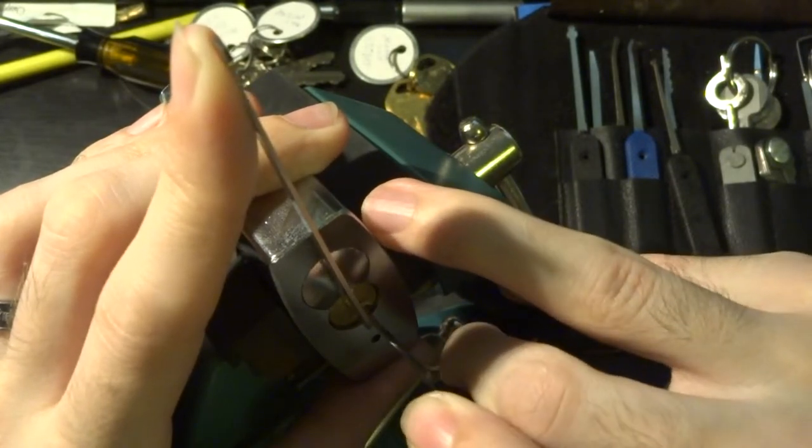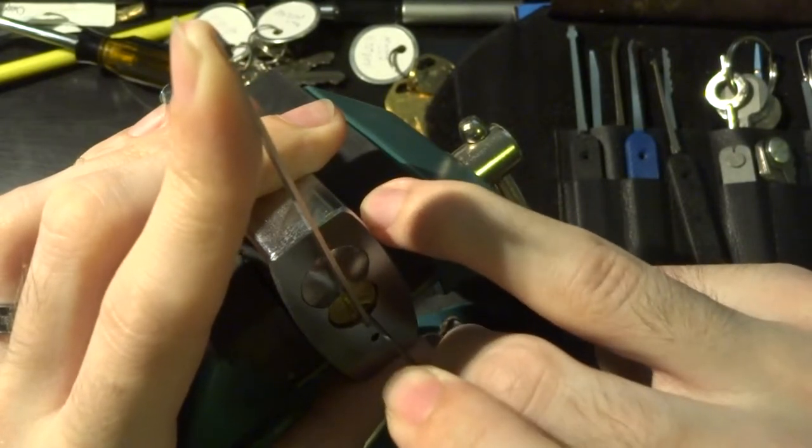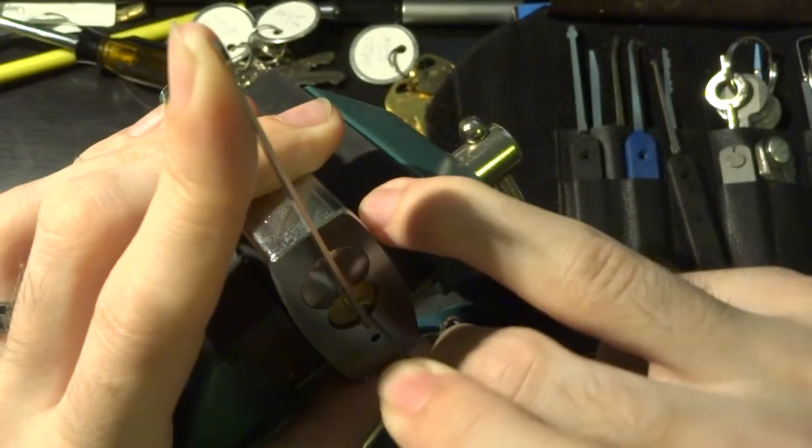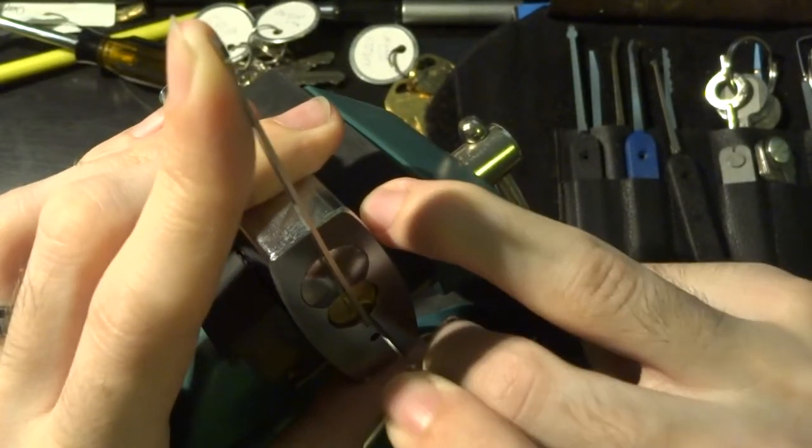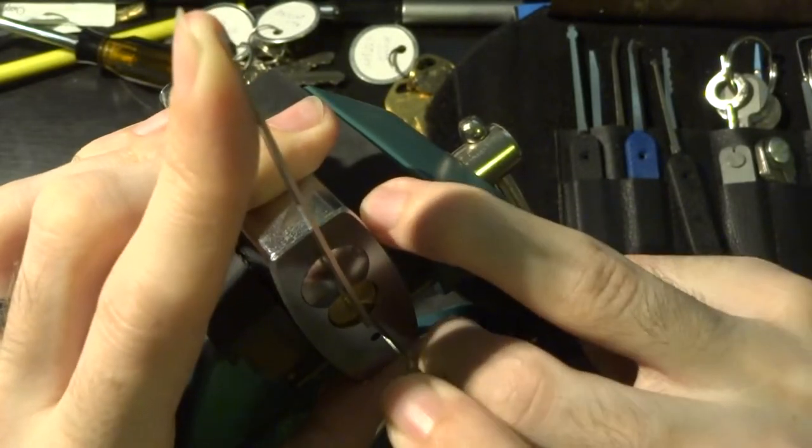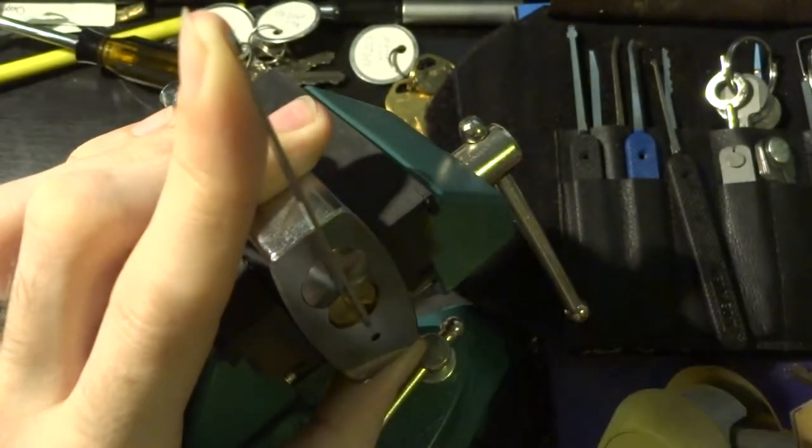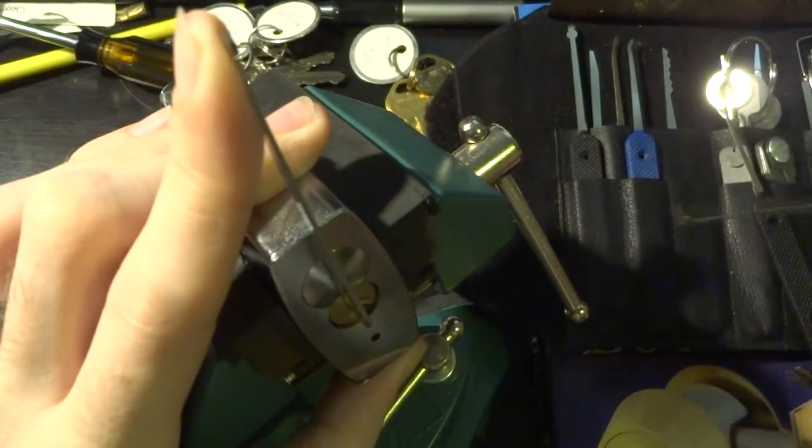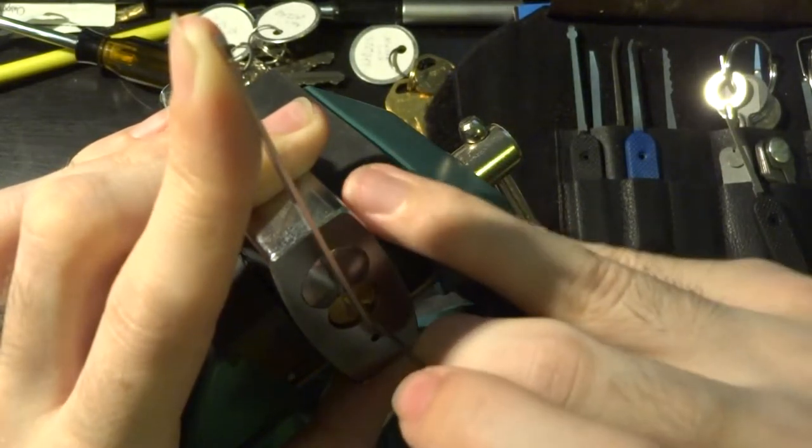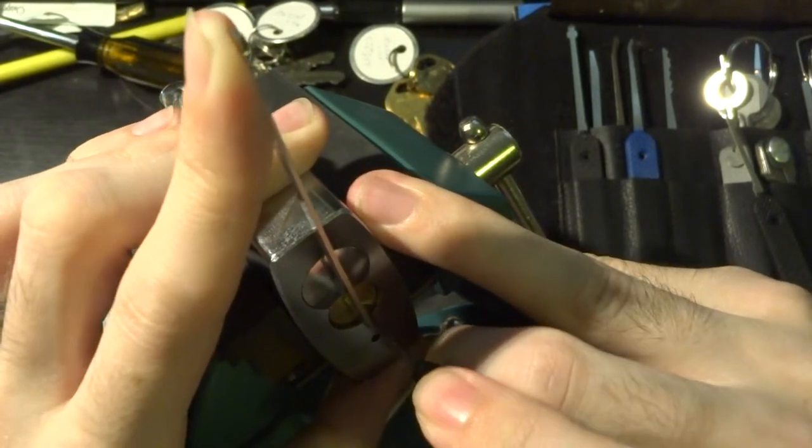I'm just going to feel around very carefully for a binding pin. Now it looks like we've got four binding on us now, and now five. Now I can't seem to work the hook under there, so we're going to switch to a half diamond pick to try to get underneath that sticking pin, which it has.